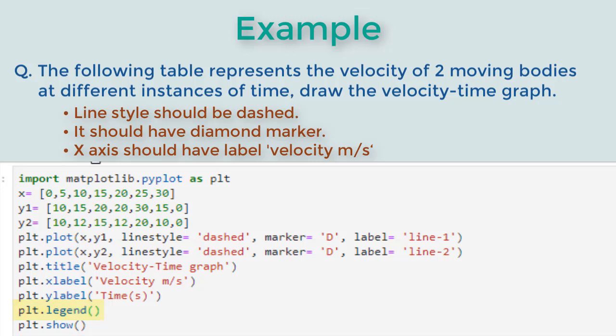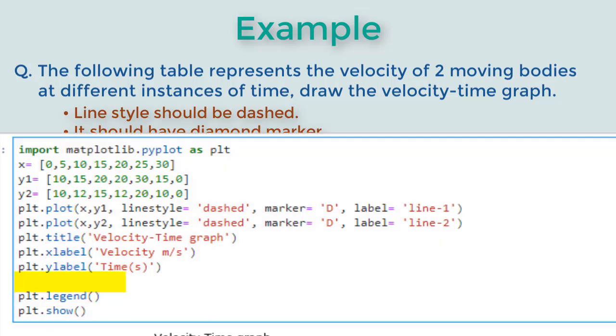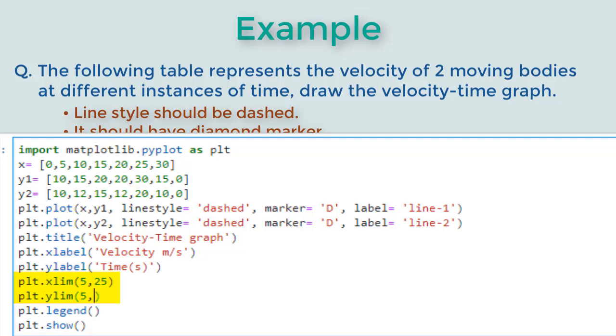When we plot the graph, pyplot automatically finds the best fitting range for the x and y axis. However, if you want to manually set it, you can use the xlim and ylim functions. They take the min and max values and show the data points within this range.